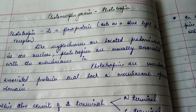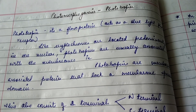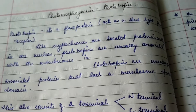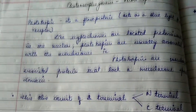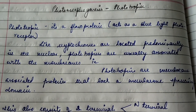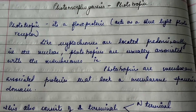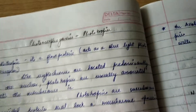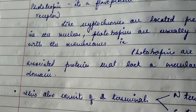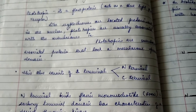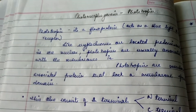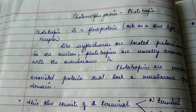Hi guys, welcome back to another video. This video is the second part of the topic photomorphogenesis. In the last part, I had explained the topic cryptochromes - that was the first part of photomorphogenesis. Now we'll be studying what phototropins are. Just go and watch the previous video if you haven't, as it explains cryptochromes in a brief but well-explained manner.